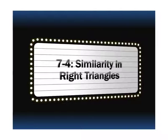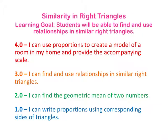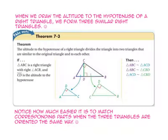Lesson 7-4 is on similarity in right triangles. Take a minute to read over the learning goal and scale, and find where you are on the scale before we begin the lesson. When we draw the altitude to the hypotenuse of a right triangle, we form three similar right triangles.